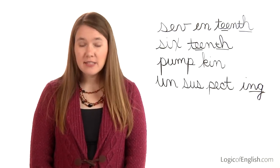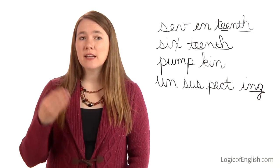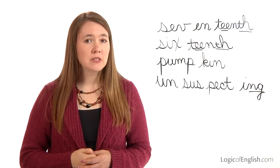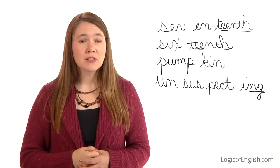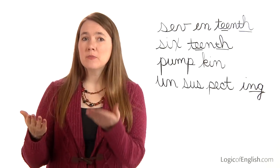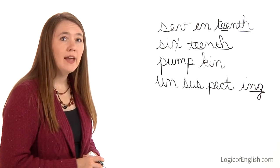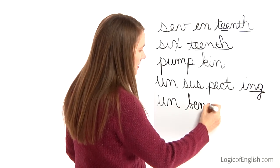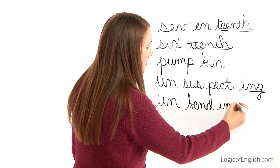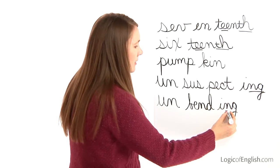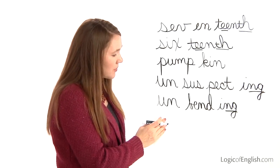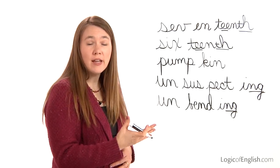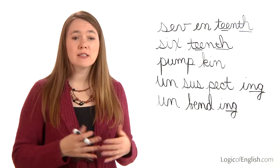Let's do the word unbending. The teacher is unbending about the rules. How many syllables in un-bend-ing? Three. The first syllable is un: u, n. The second syllable is bend: B, e, n, d. And the third syllable is ing: i, n. Go ahead and write unbending. Un: u, n. Bend: B, e, n, d. Ing: i, n. And how will we mark it? Underline the ng. The root in unbending is bend, which means to bend or shape something. And if it's unbending, it's not bending — you can't bend it into a different shape, or you can't change it.